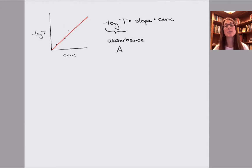And the absorbance has a symbol A, and it's a unitless value. Since transmittance was unitless because it was the ratio of light going in to light going out, negative log of a unitless number is going to be unitless as well.